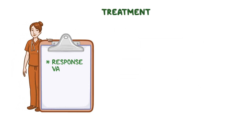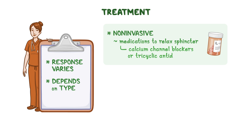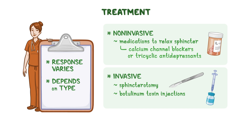Response to treatment varies greatly between individuals and depends on the type of SOD, so a combination of non-invasive and invasive interventions can be used. Non-invasive treatments may include medications meant to relax the sphincter, like calcium channel blockers or tricyclic antidepressants. Invasive treatments can include a sphincterotomy, which involves surgically cutting the sphincter of Oddi to allow it to relax, and botulinum toxin injections into the muscle to prevent spasms or narrowing.